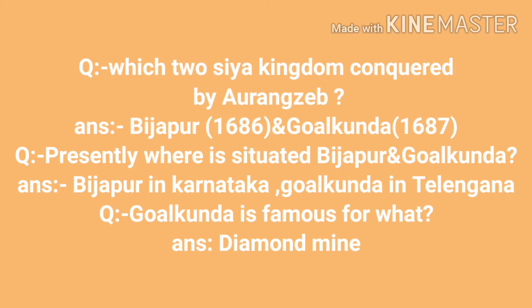Which two Shia kingdoms were conquered by Aurangzeb? Bijapur in 1686 and Golconda in 1687. Presently, where are Bijapur and Golconda situated? Bijapur is in Karnataka and Golconda is in Telangana. Golconda is famous for its Diamond Mines.